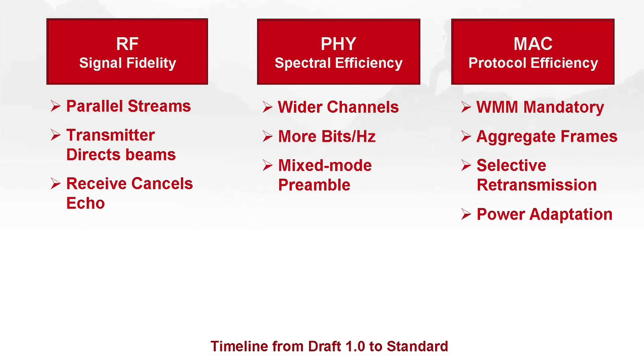So with 802.11n, advances have been made in all of these areas. Unlike previous protocols, which focused on one or the other, the migration from 1 to 2 megabit B to 11 megabit B was really all about trying to get from some basic barcode encoding to CCK. The migration from B to G or A was really one of trying to get OFDM into the mix. But with 802.11n, the mechanisms are far-reaching and pervasive. They impact RF, PHY, and MAC.